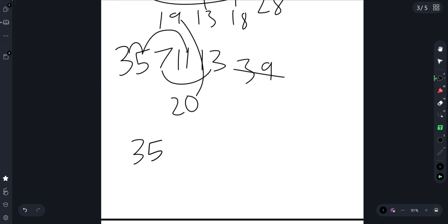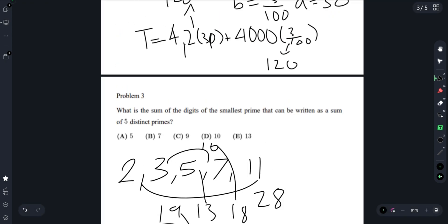I'm going to try the next smallest one: 5, 7, 11, 13, 17. That's 8, 15, 28, 43. And 43 is prime. 4 plus 3 is 7.